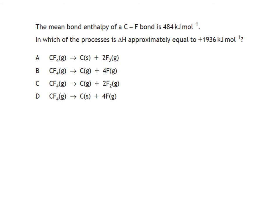Next question - pause and we'll go through the answer. The mean bond enthalpy for the carbon-to-fluorine bond is 484 kilojoules per mole. In which process is the enthalpy change approximately equal to four times that, 1936 kilojoules per mole? We have the CF4 molecule with one, two, three, and four carbon-to-fluorine bonds. If you break one of them it requires 484 kilojoules per mole, so breaking four would require four times that energy.